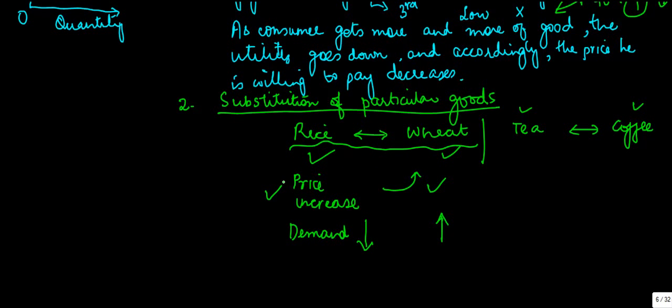whenever there is a price increase in that commodity, the demand for that goes down and the demand for the substitute good increases.